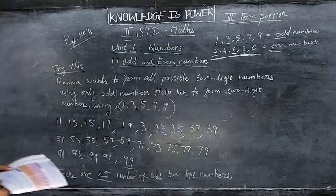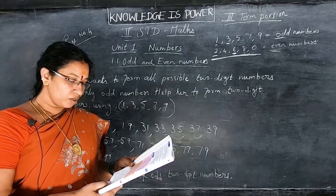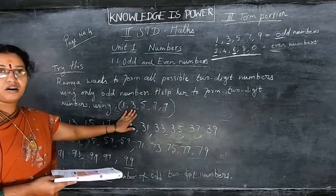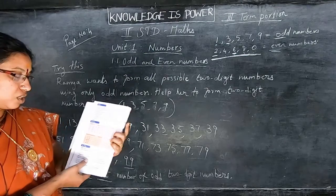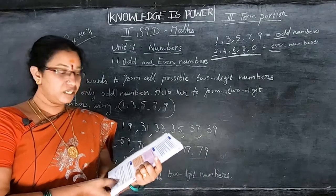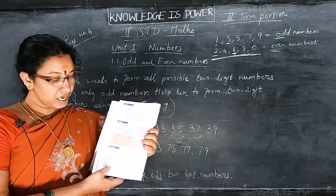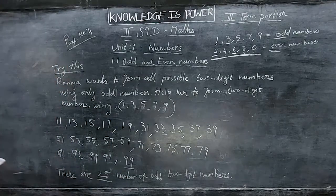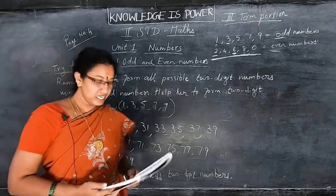Next one: Kavita wants to form all possible two-digit numbers using only even numbers. The given even digits are 0, 2, 4, 6, and 8. Using these numbers, you should write all the even two-digit numbers, count them, and write the total in the dash — there are dash number of even two-digit numbers. This is an exercise for you children. The rest we will continue in the next class. Thank you.